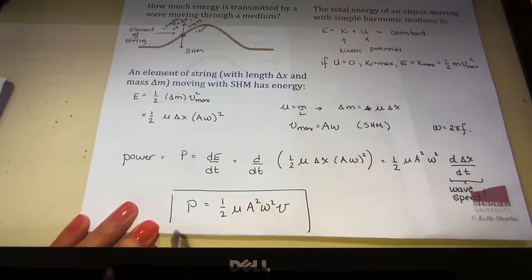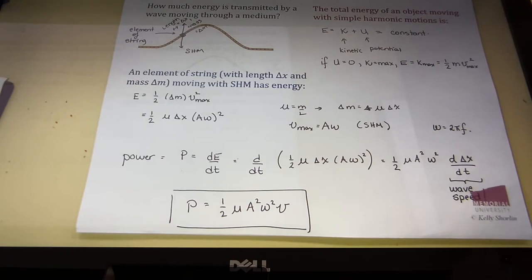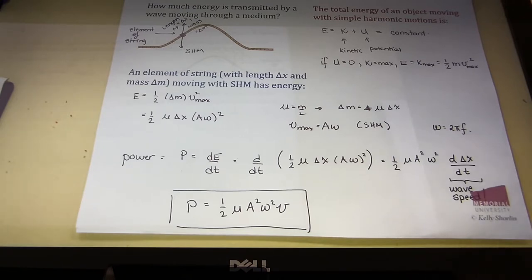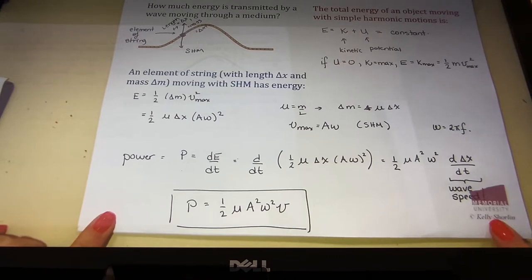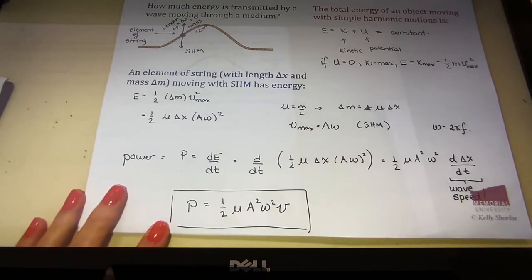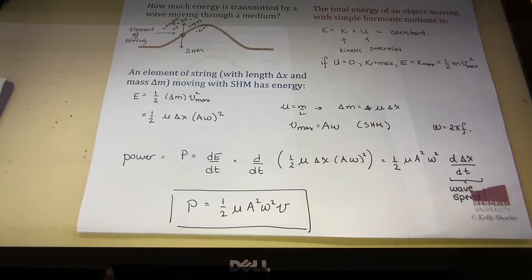So there's the power delivered by a traveling wave on a string. These are all quantities we can measure: the linear mass density, the amplitude of the wave, the frequency, and the wave speed. This equation is pretty useful. A student asked what to call it — power delivered by a traveling wave is probably the right name.